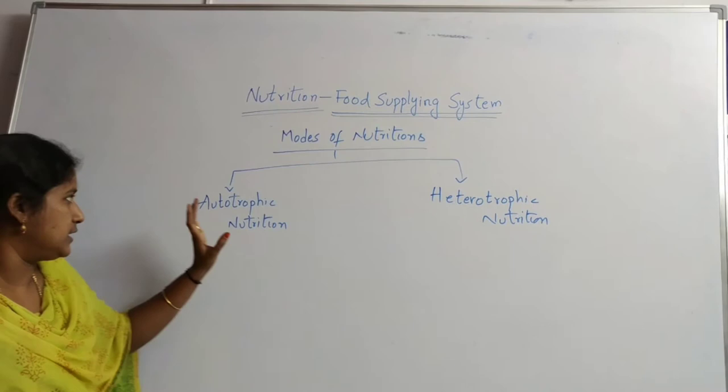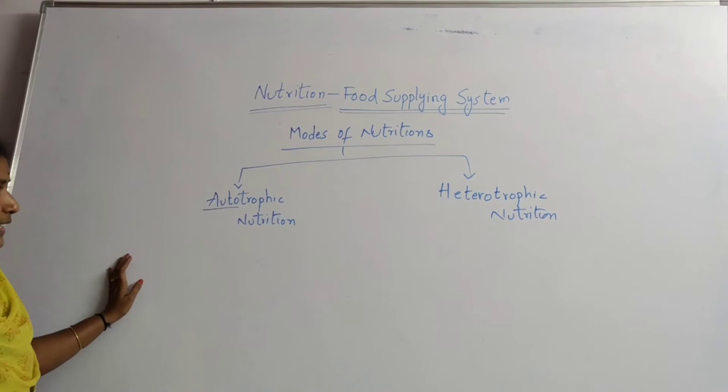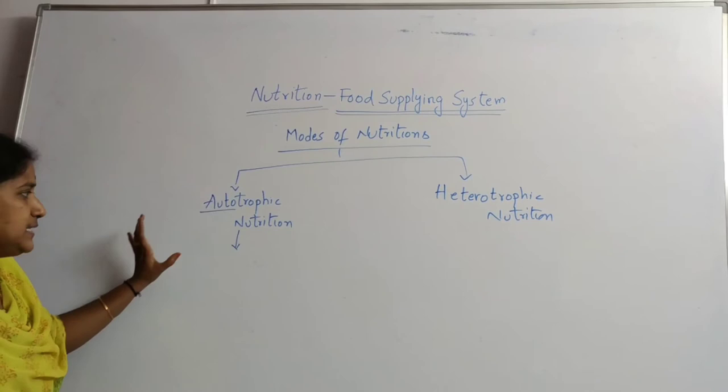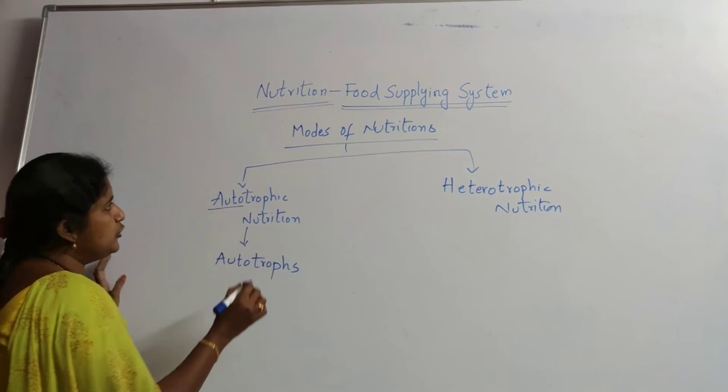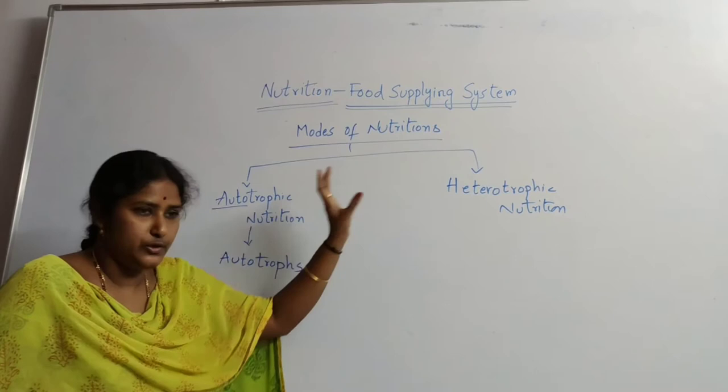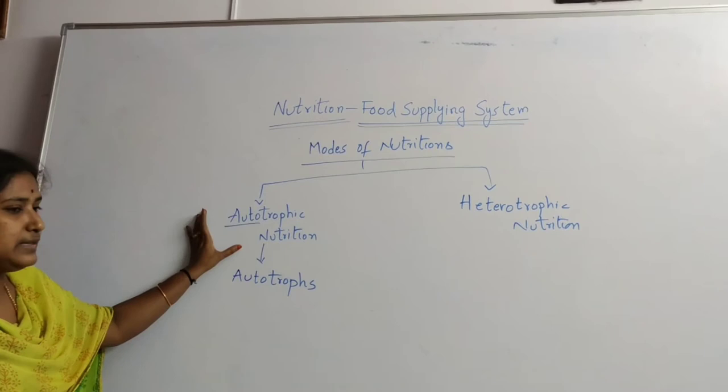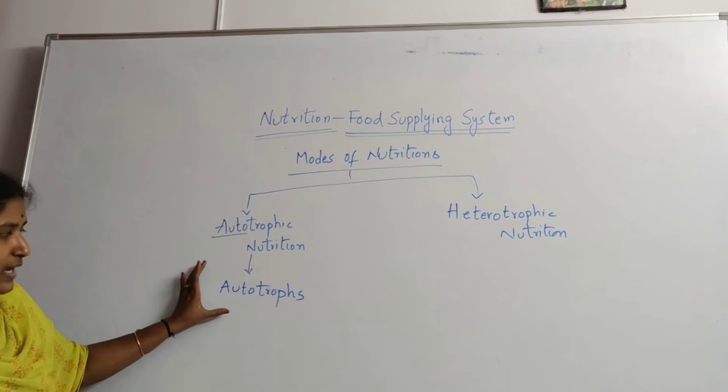Coming to autotrophic nutrition, in the name itself it is telling - auto means self. That is why autotrophic nutrition can be seen only in autotrophs. Mode of nutrition is two types. First one is autotrophic nutrition, second one is heterotrophic nutrition. As we all know, auto means self. Self-preparing their own food material, the organisms are called autotrophs. That is nothing but plants.